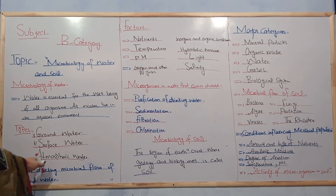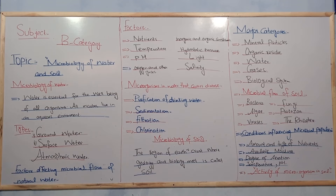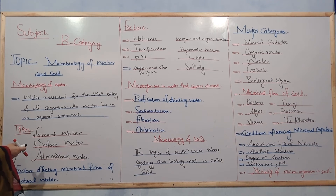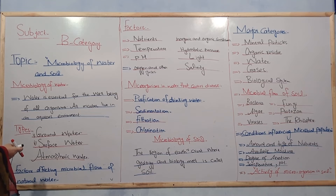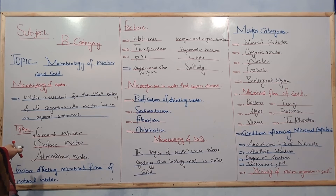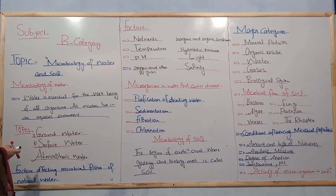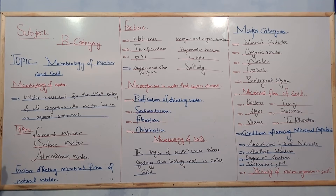If we talk about atmospheric water, atmospheric water is basically moisture contained in clouds, snow, sleet, hail, and rain, or in the air. These forms represent what we call atmospheric water.